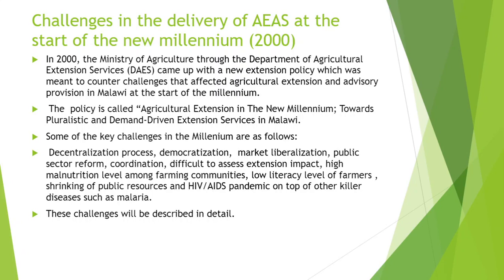Let's start by looking at democratization. Democratization is the process of making public sector services accessible to every member of society. This is taken as a challenge in agriestation because small farmers are demanding extension services unlike in the past. Due to this, there was a requirement for extension services to reform their approaches in order to respond to the high demand effectively.